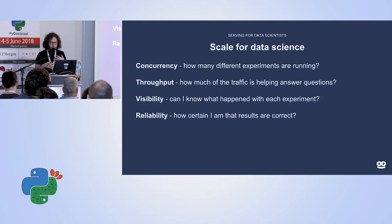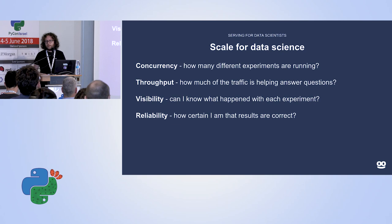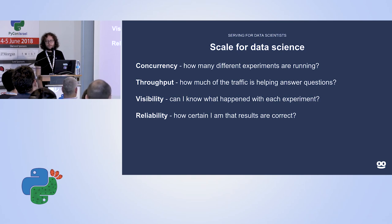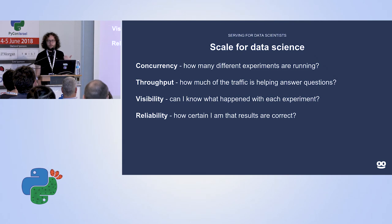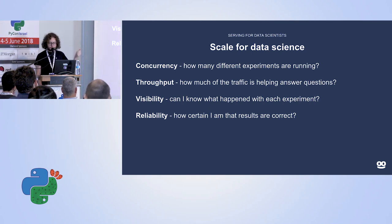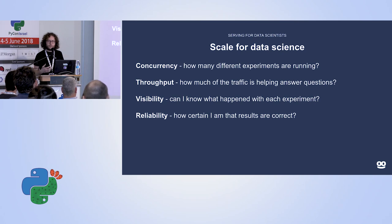To summarize what we want as data scientists from the serving system: we'd like concurrency — to run a lot of experiments, probably one per person on the team or more. We'd like throughput in the data science sense — using every data point to answer some question, because every time you waste traffic you've wasted questions you could have answered. You obviously want visibility: if all those experiments happened but you couldn't differentiate them or track your variables, it's not useful.